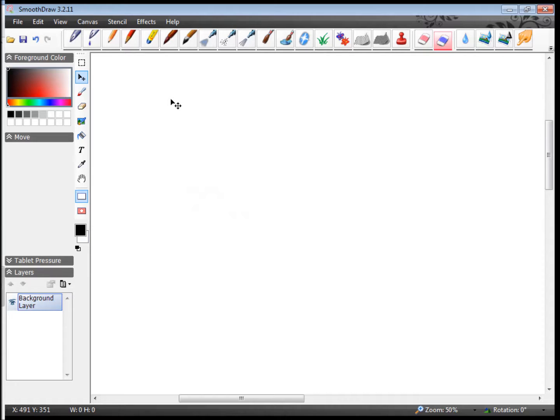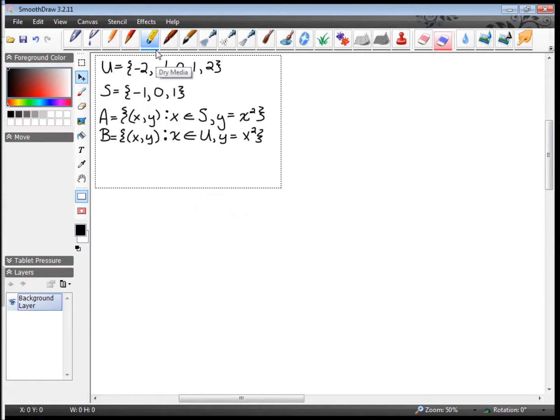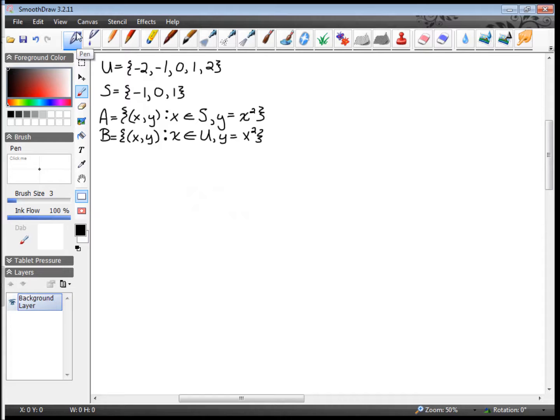I'm actually going to jump to what I think is the hardest recommended homework problem. This is Section 1-1, problem number 29. Let U be the set containing {-2, -1, 0, 1, 23}, and S be the set containing {-1, 0, 13}. Those are our two base sets. We have two constructor sets: A = {(x,y) : x ∈ S, y = x³}, and B = {(x,y) : x ∈ U, y = x³}.